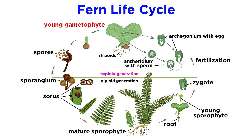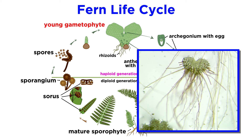Spores are released from the sporangia, where they fall to the ground and germinate as new haploid gametophytes. Not much is known about fern gametophytes in the wild, because they are very small and ephemeral, meaning they don't live very long.